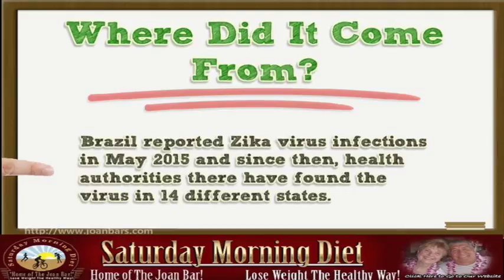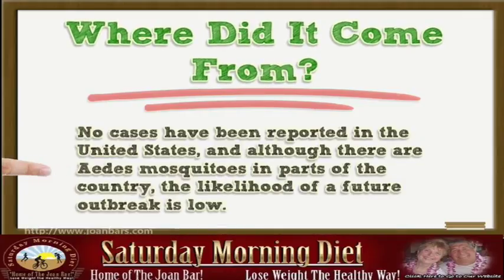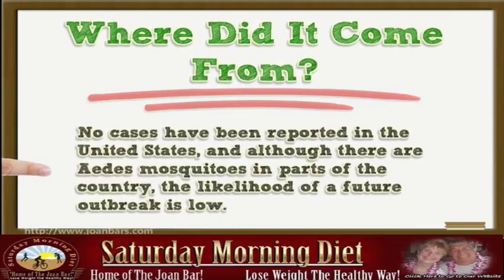Brazil reported Zika virus infections in May 2015 and since then, health authorities there have found the virus in 14 different states. In October, Colombia reported its first cases and last week, the virus was reported in Yucatán, Mexico, and in the Caribbean. No cases have been reported in the United States, and although there are Aedes mosquitoes in parts of the country, the likelihood of a future outbreak is low.